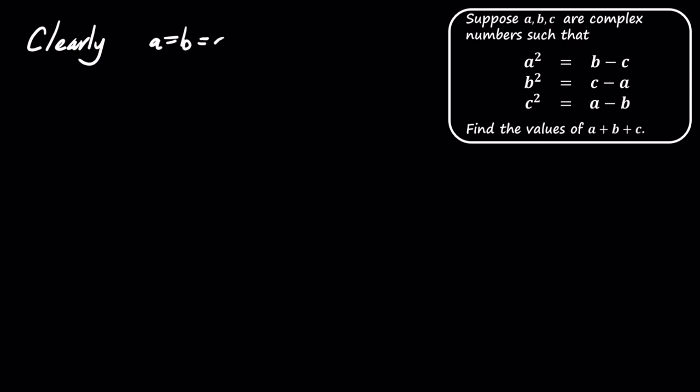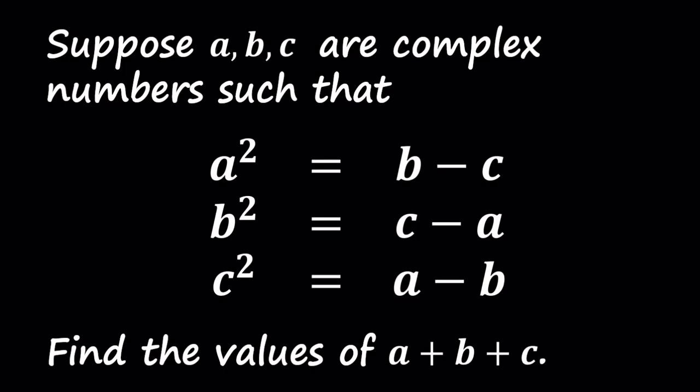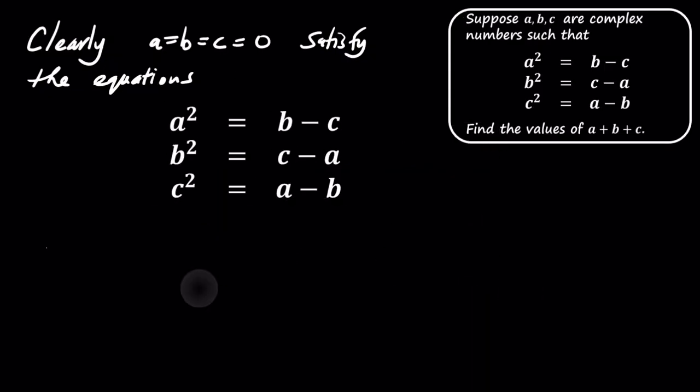When A, B, and C are zero, we find that each equation holds because both sides equal zero. Thus, the sum of A, B, and C equals zero is one valid solution.